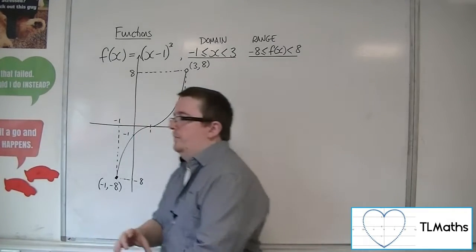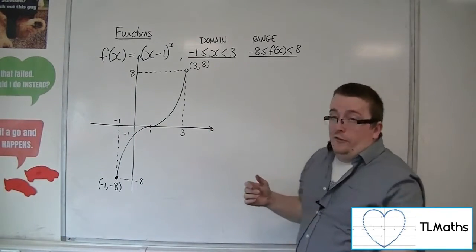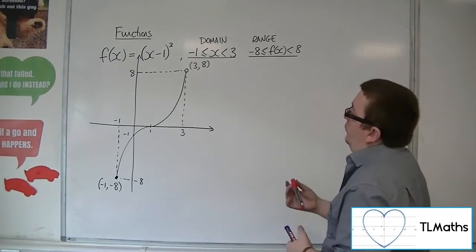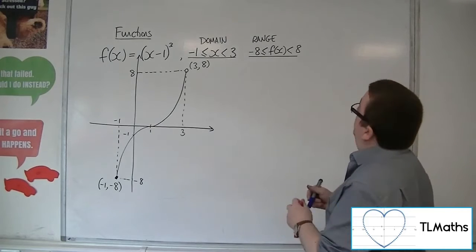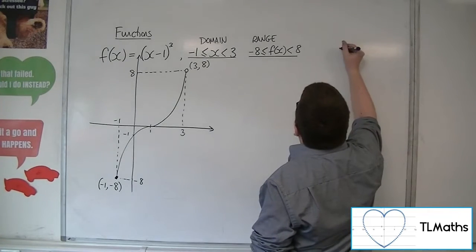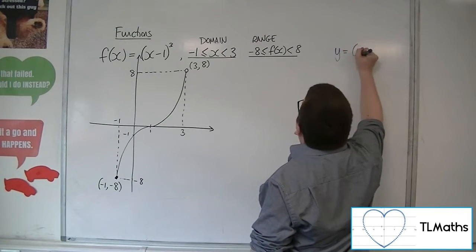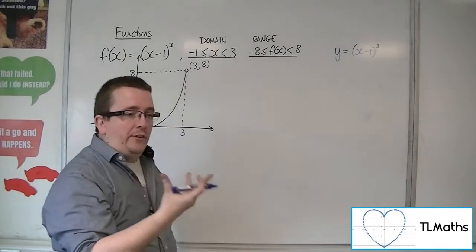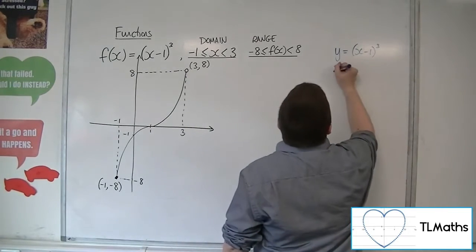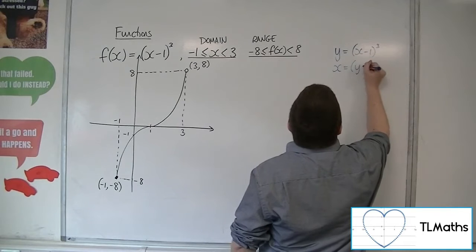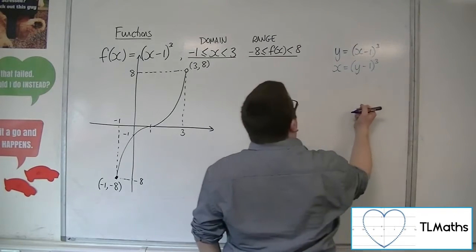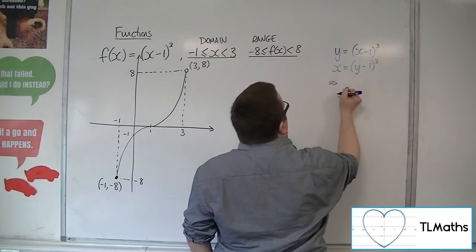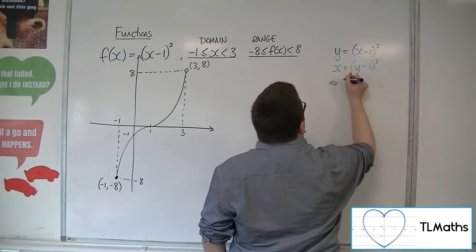So now for the inverse function. So in order to find the inverse function, I first of all write it as y equals x minus 1 cubed. We swap the x's and y's. So x is equal to y minus 1 cubed.